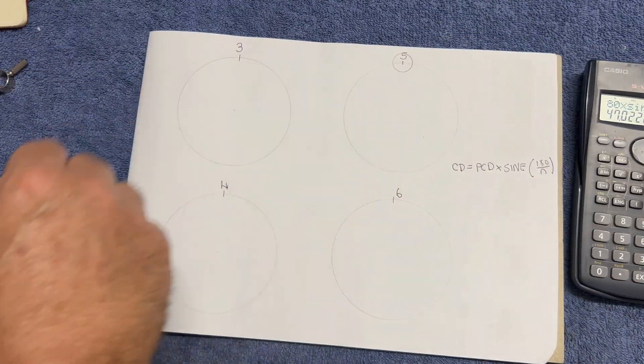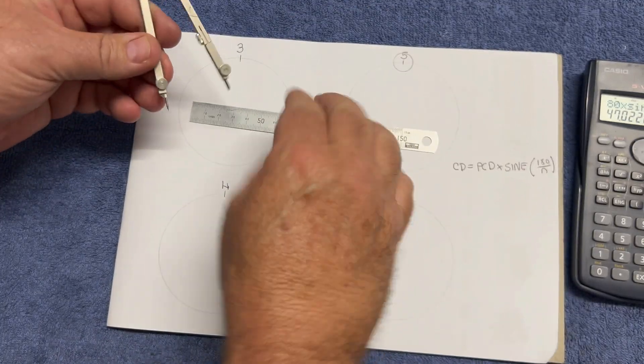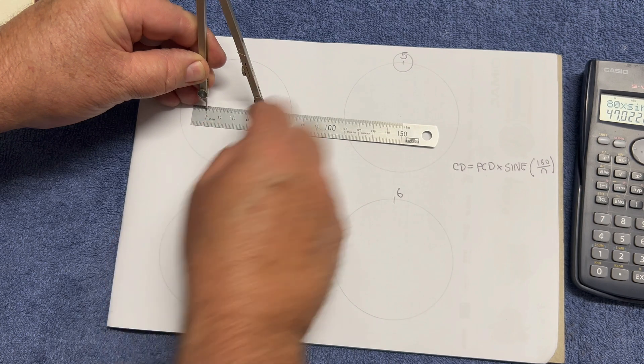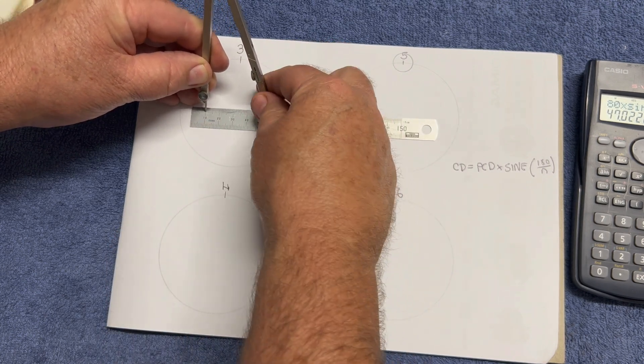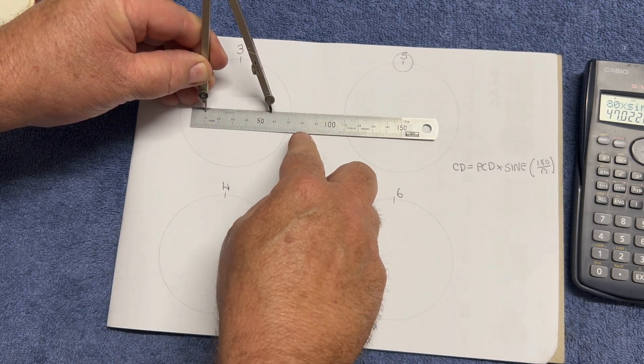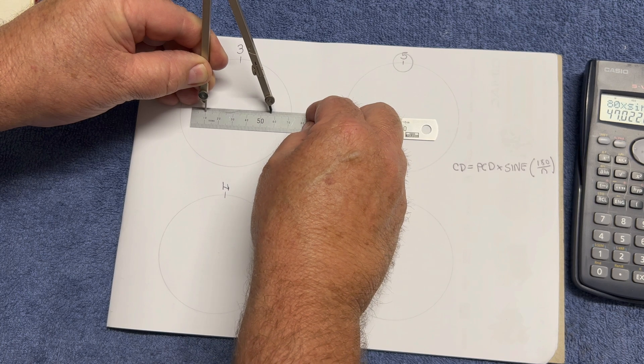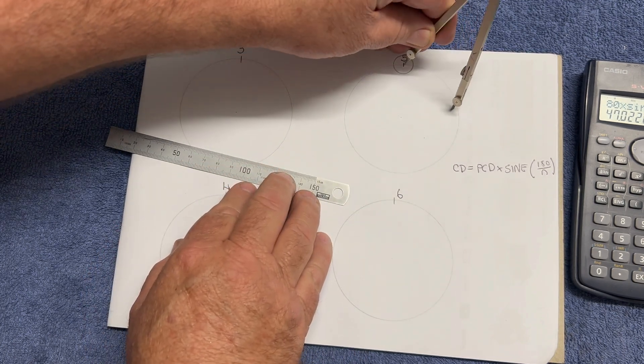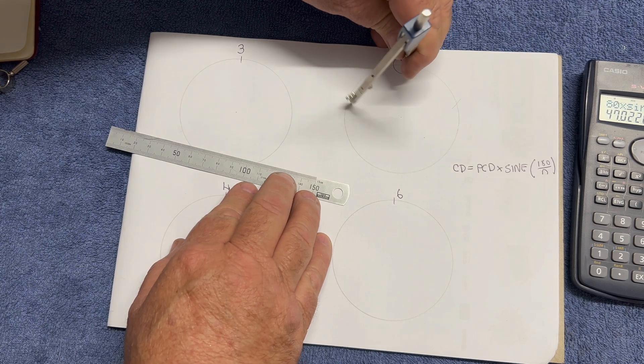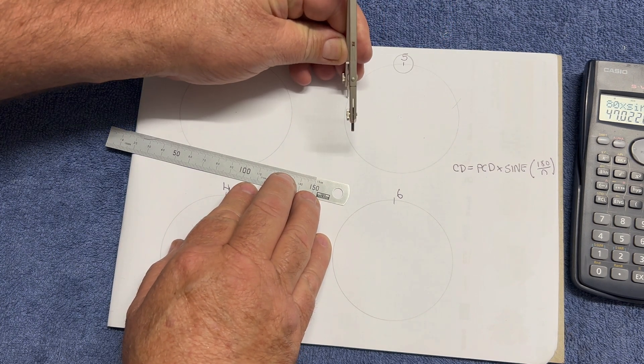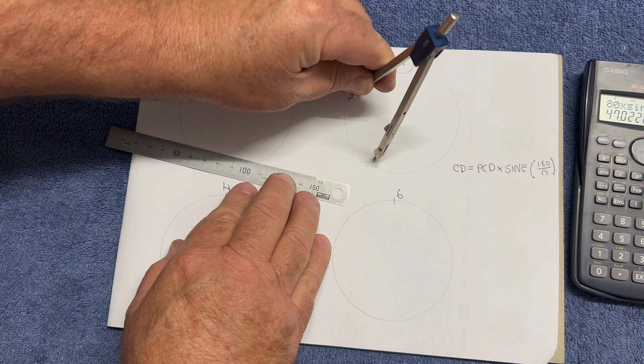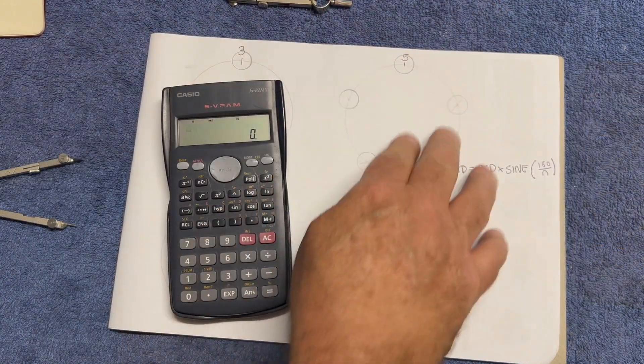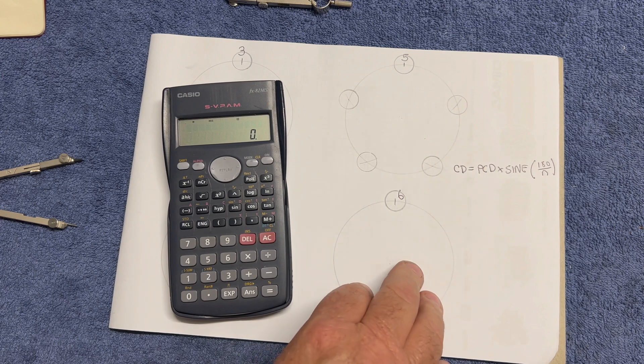So let's work that out. I've got my bigger compass here. So 47, I'll start on the 10, so I'll make that 57. So here we go. We put it on the start point. One, two, step out to our next point, and step around here. So we've done this first one here, which is five circles around a PCD.